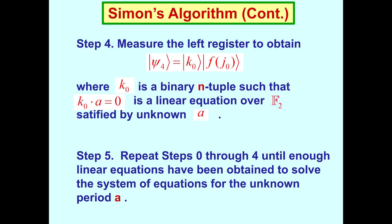So, what we need to do is simply repeat steps 0 through 4 enough until we have enough linear equations to solve a system of linear equations over GF of 2. And this is Simon's algorithm, a very simple algorithm.